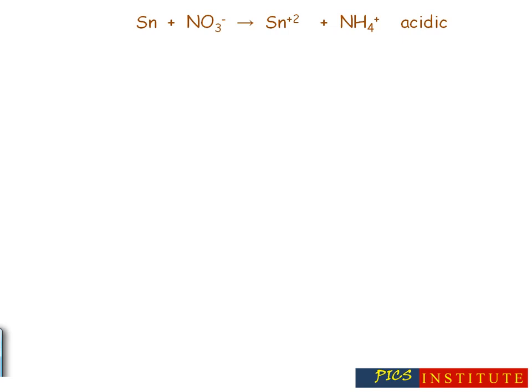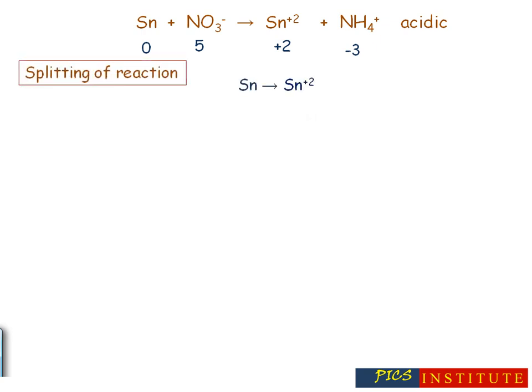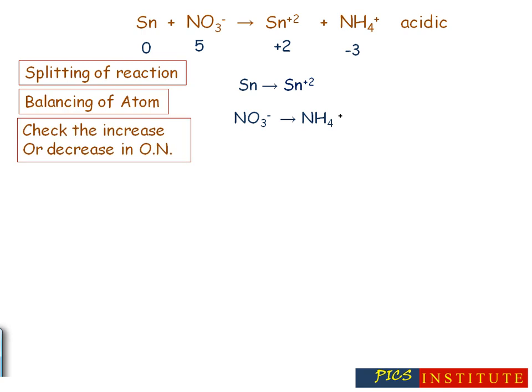Let's take one more example. In this case we are balancing a redox reaction again in acidic medium. The oxidation numbers of various species are noted. First step: splitting of the reaction. Second step: balancing of atoms other than oxygen and hydrogen — no need of balancing since all atoms are balanced other than oxygen and hydrogen. Now check the increase or decrease in oxidation number: in the first equation there is a two-unit increase, and in the second equation there is an eight-unit decrease.